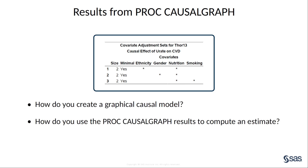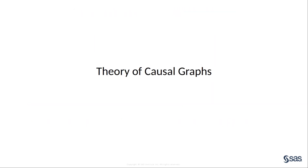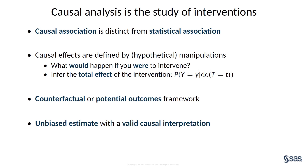This example leads to two immediate questions. First, how do you create a graphical causal model for your application? Second, how do you use the PROC CAUSALGRAPH results to compute an estimate of a causal effect? To answer these questions, let's talk about the theory of causal graphs. The motivation for creating causal graphs is the fact that causal association is distinct from statistical association, because a causal effect is defined in terms of a hypothetical manipulation. When you seek to estimate a causal effect, you wish to know how the value of one variable would change if you were to intervene in the data generating process and change the value of another variable. Because such interventions are hypothetical, causal analysis requires a counterfactual or potential outcomes framework. A causal graph is a tool that links this counterfactual framework to a statistical strategy that can be used to produce an unbiased estimate of a causal effect that has a valid causal interpretation.